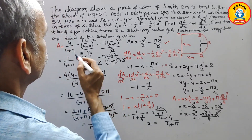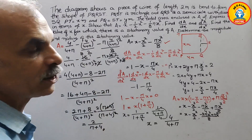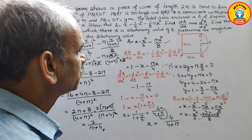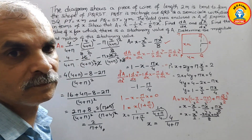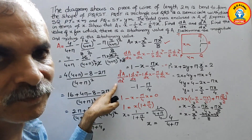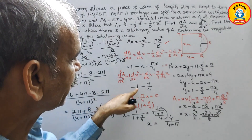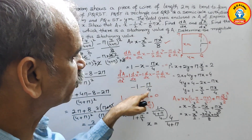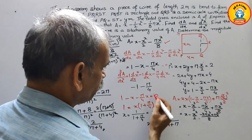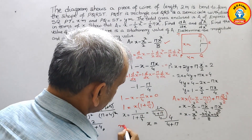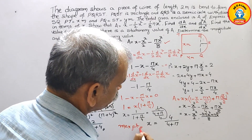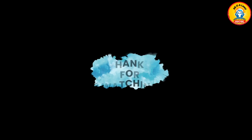For the nature of the stationary value: d²A/dx² equals minus 1 minus pi/4, and both terms are negative. Therefore d²A/dx² is negative, which means this stationary value is a maximum point.